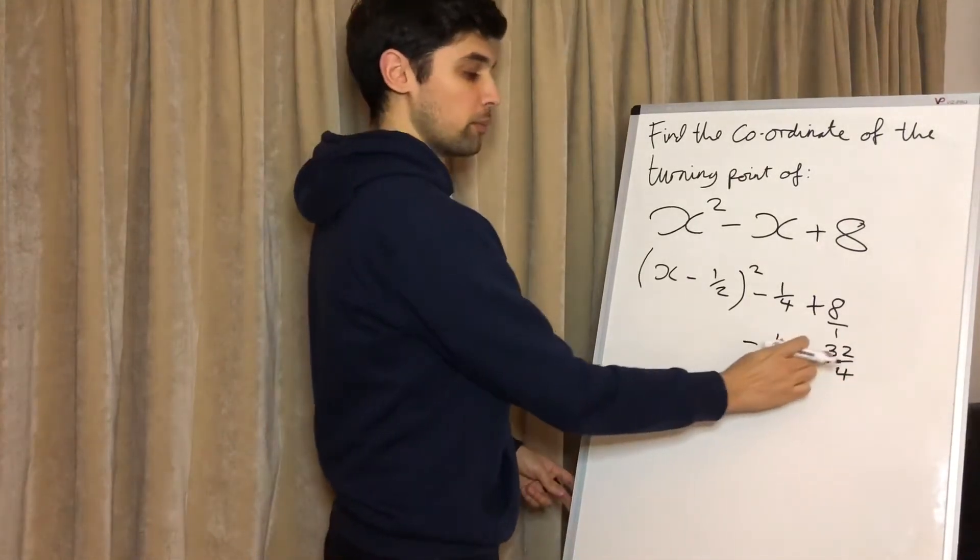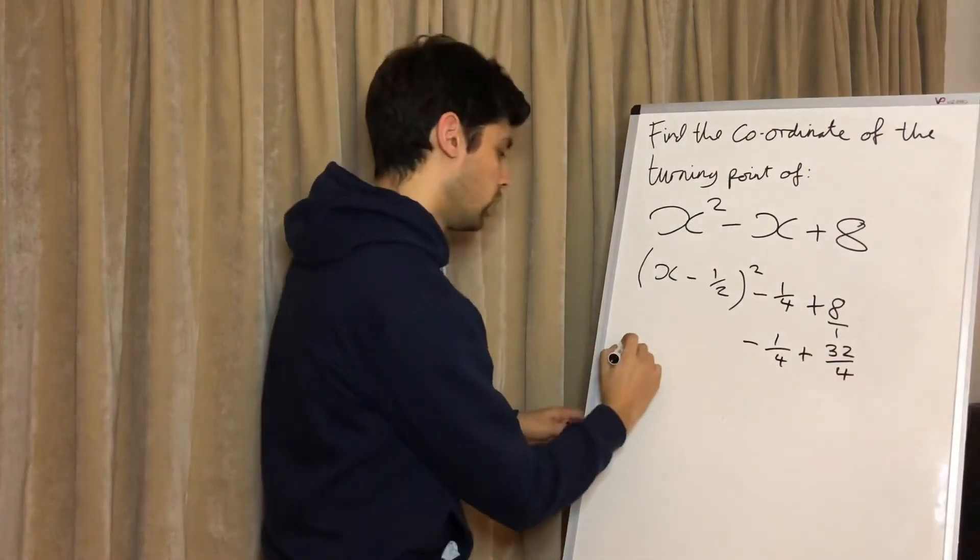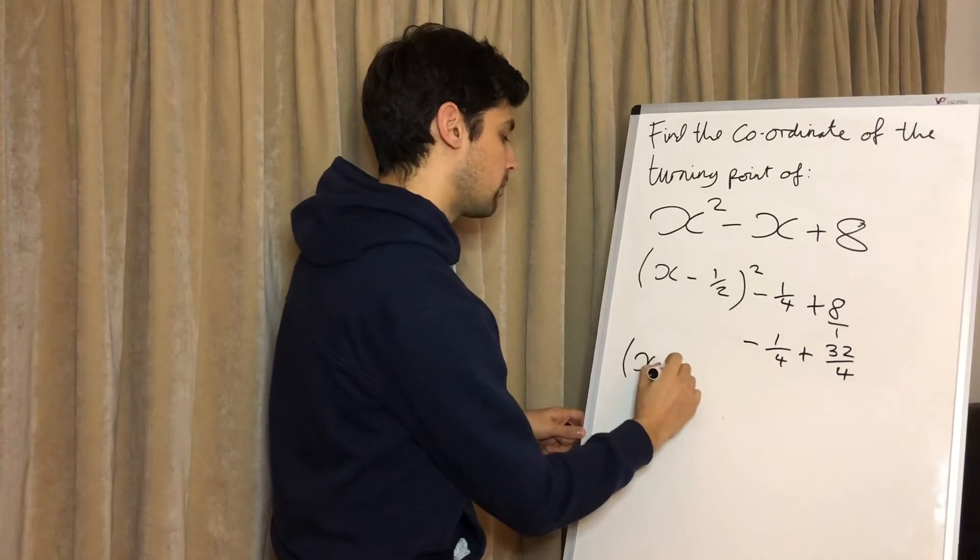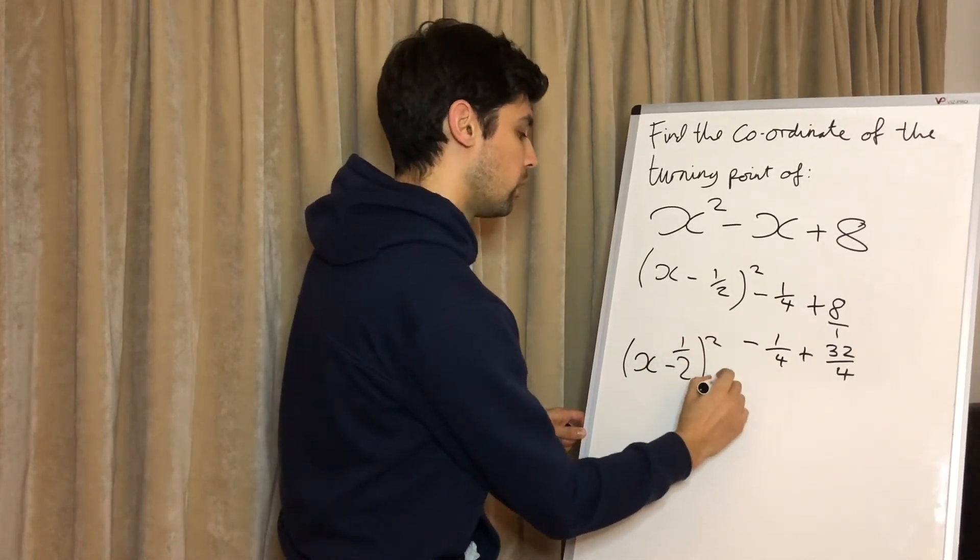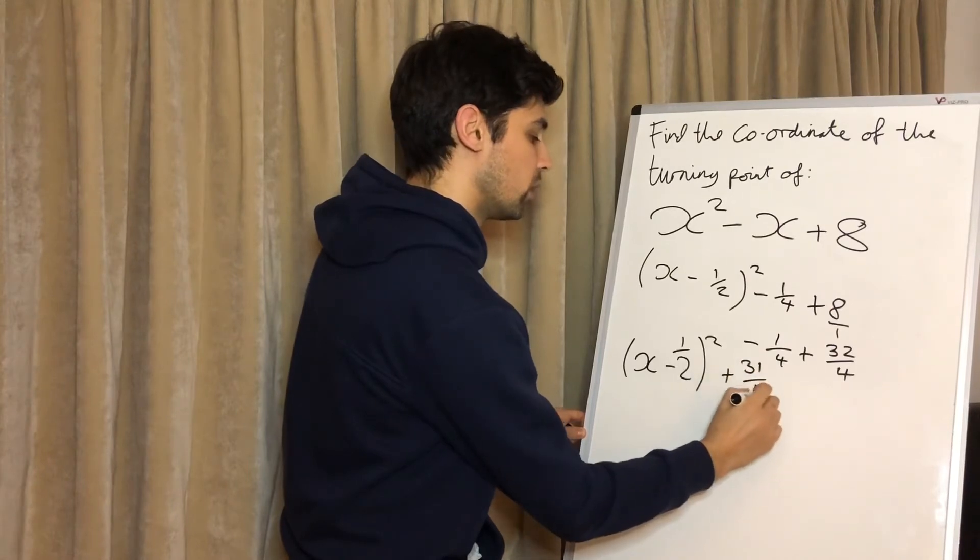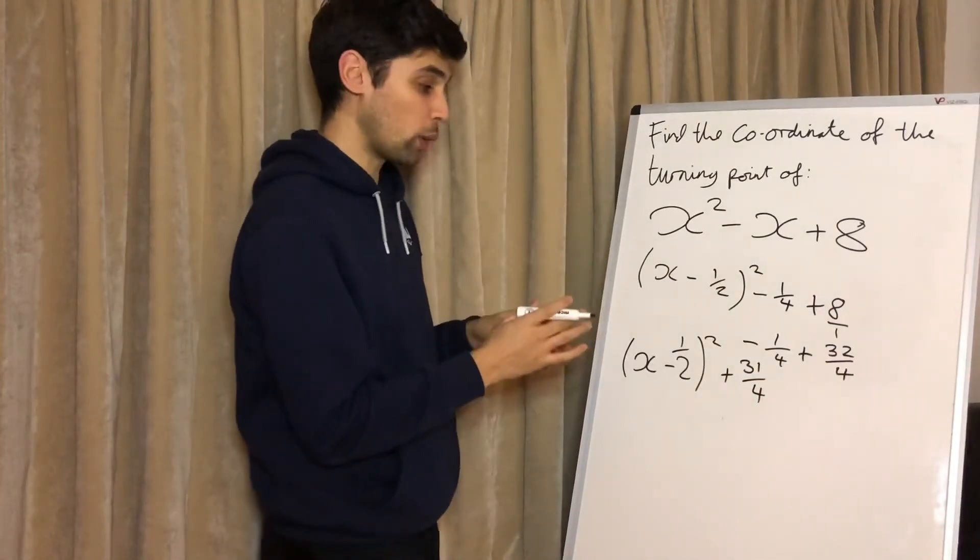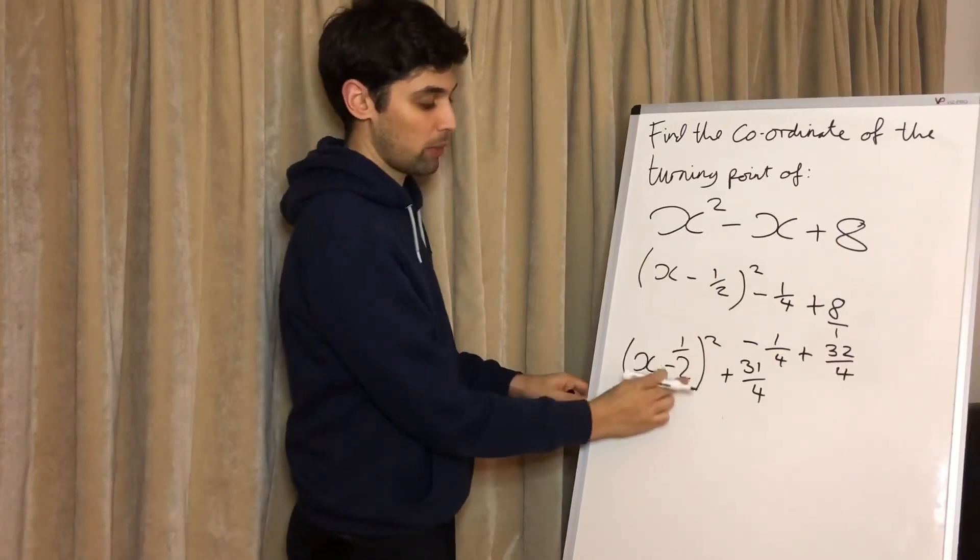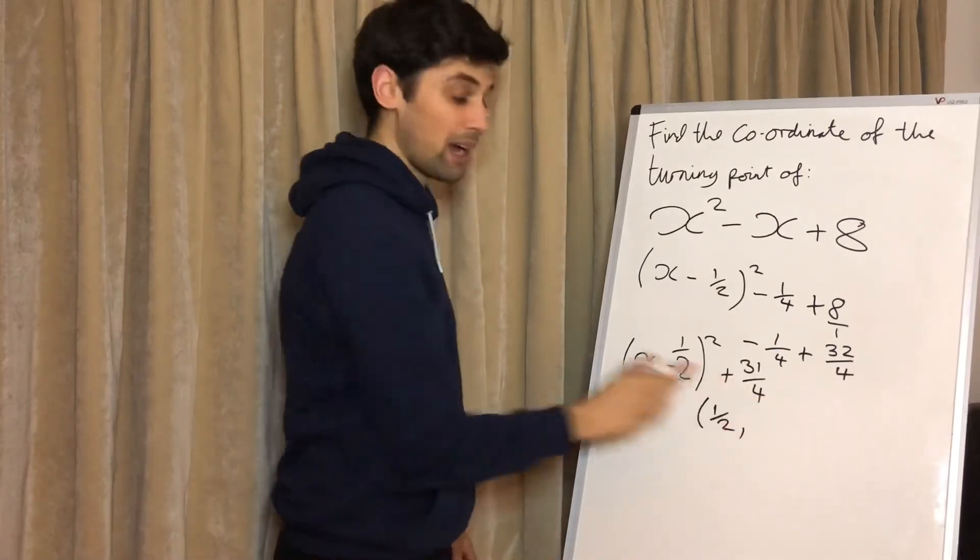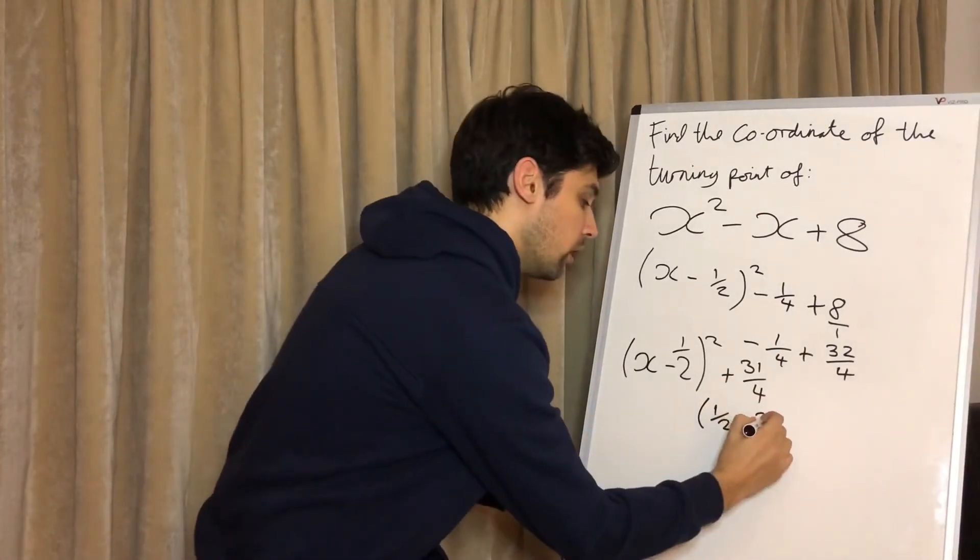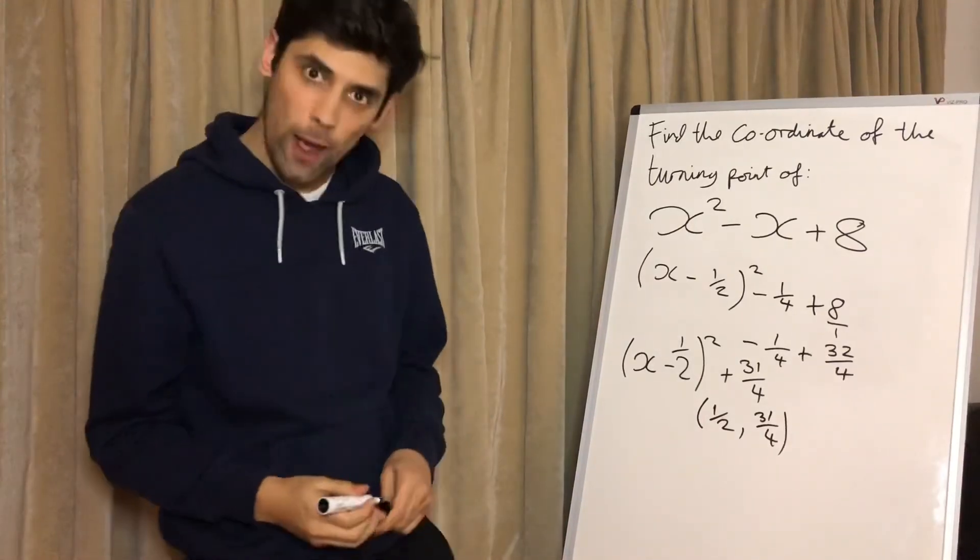Minus one plus 32 is 31. So ultimately it gives us (x - 1/2)² + 31/4. To find the coordinates of the turning point, it would be this number with the sign flipped, so a half, and this number as it is, 31 over four. That's your turning point.